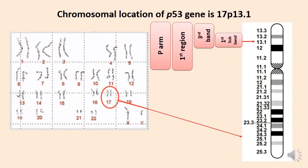Now you can understand the location of the p53 gene. It is on the 17th chromosome, on the p-arm, the first region, the third band, and the first subband — written as 17p13.1.